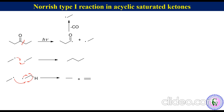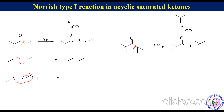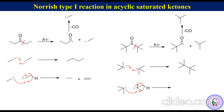Similarly, di-tert-butyl ketone upon irradiation undergoes Norrish Type 1 cleavage to produce an acyl radical and a t-butyl radical. The acyl radical immediately loses carbon monoxide to produce a second t-butyl radical. The two t-butyl radicals combine together to produce 2,2,3,3-tetramethylbutane, and they undergo disproportionation to produce 2-methylpropane and 2-methylpropene.